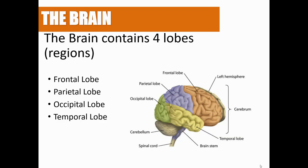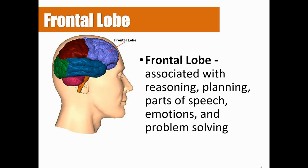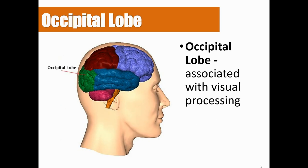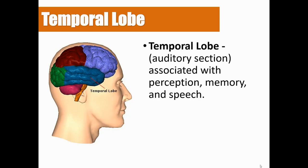One more thing you need to know: the brain contains four lobes or regions. The frontal lobe is associated with reasoning, planning, parts of speech, emotions, and problem-solving. The parietal lobe is associated with movement, orientation, recognition, and perception of stimuli. The occipital lobe is associated with visual processing. And the temporal lobe is associated with auditory processing, perception, memory, and speech. Feel free to pause the video to get these notes down.